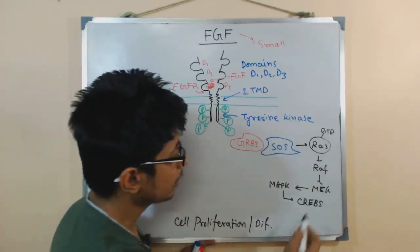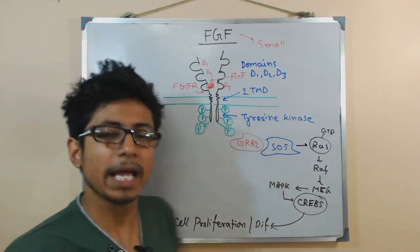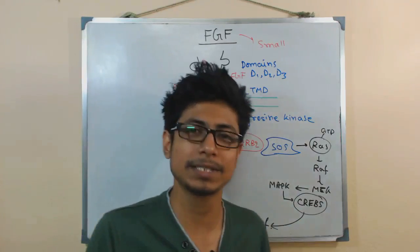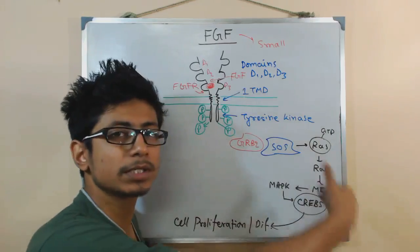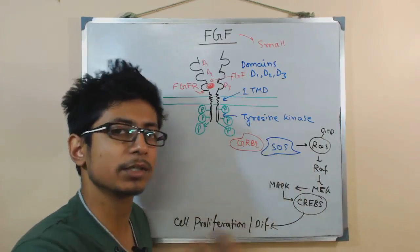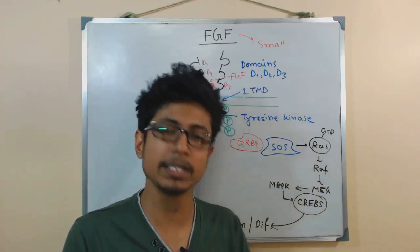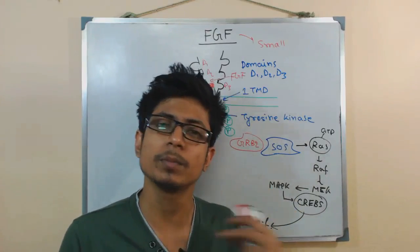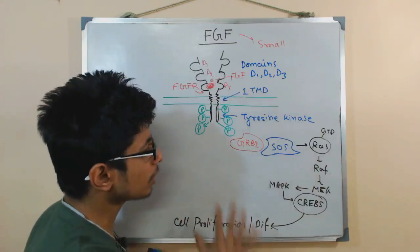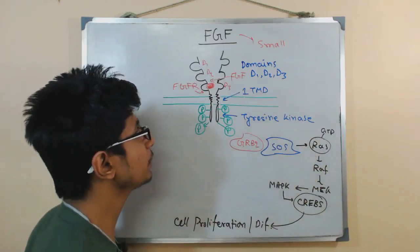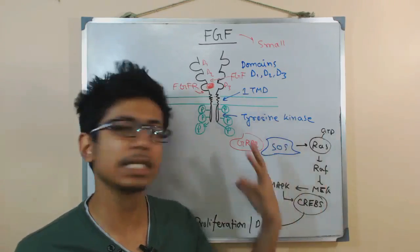Once the CREBs are activated, they go inside the nucleus and help in production of mRNA. That mRNA is released from the nucleus into the cytosol, ribosomes sit on it, and it produces the proteins necessary for cell growth and division — proteins like cyclins, cyclin-dependent kinases, and other cell cycle and cell division proteins. I have not discussed this in much detail because I have already covered it in the earlier video on epidermal growth factor.